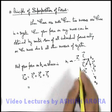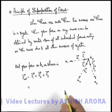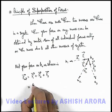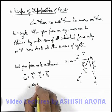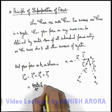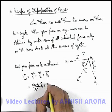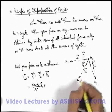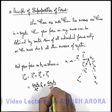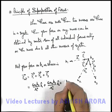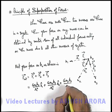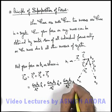And here if we substitute the values of f1, f2, f3, this can be written as force acting on m not due to m1 will be G m1 m not by r1 square r1 cap, and f2 will be the force due to m2 which is G m2 m not by r2 square r2 cap, plus G m3 m not by r3 square r3 cap.